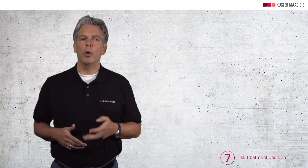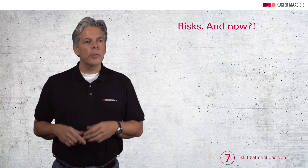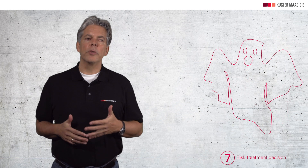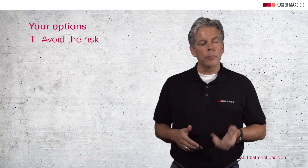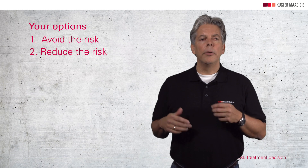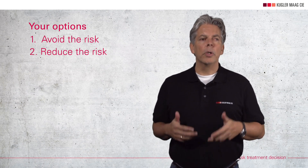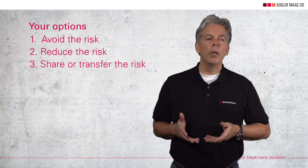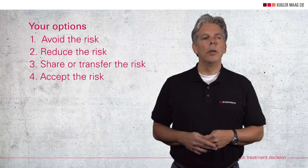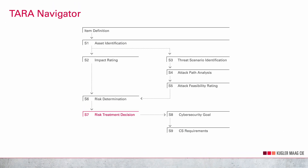Step number 7 is called risk treatment decision. Once the risks are on the table, the question is how to deal with them. There are basically four options: first, avoidance; second, reduction — for example, by specifying a security control (technical or organizational) or introducing redundancy; third, sharing or transfer to third parties; and fourth, acceptance. Please keep in mind that it is very tricky to judge how effective a cybersecurity control is — this is where every risk assessment stands and falls.